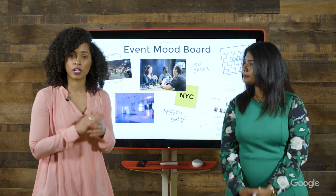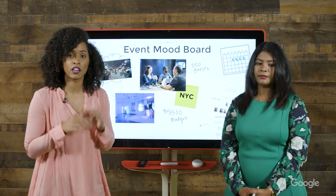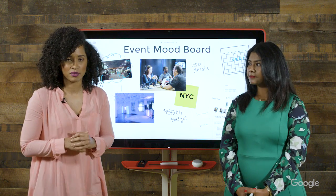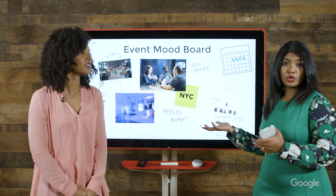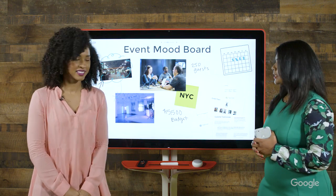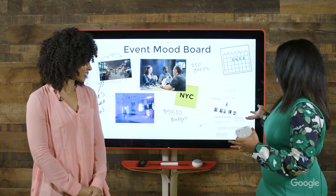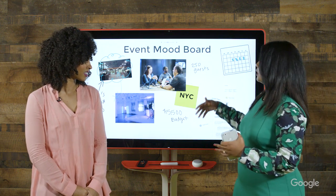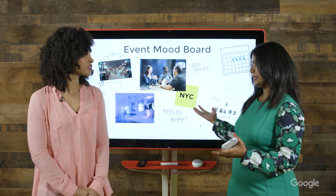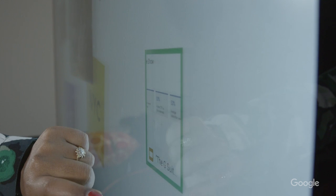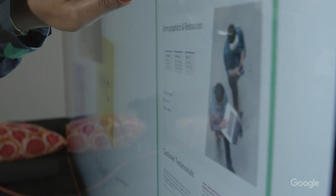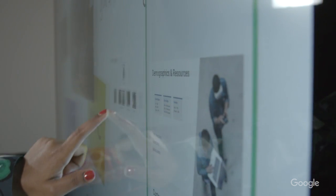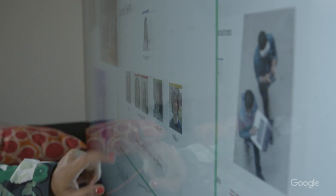Although Jamboard isn't a G Suite core service, it integrates easily with G Suite apps. Let's say I want to create a mood board for a G Suite show event. I pick up one of the slides from our original proposal to discuss the number of guests, the budget, and all the details. From the Jamboard's toolbar, I just touch the Search Web or Search Images icon to search for relevant content. When I find what I want, I drag and drop my selection onto the screen.